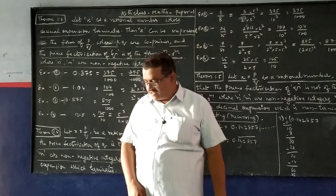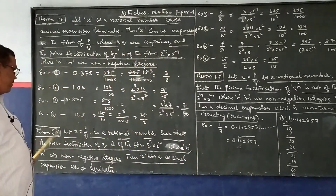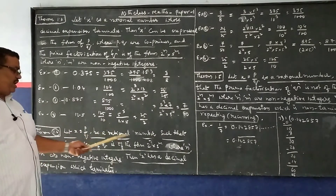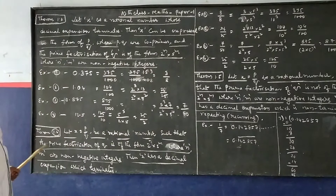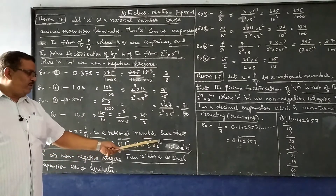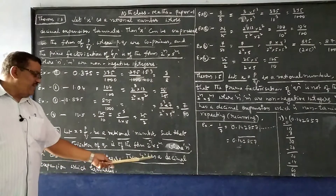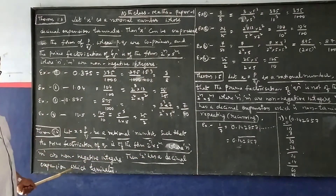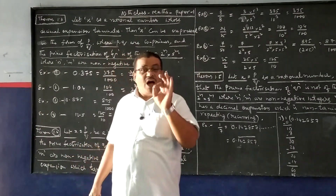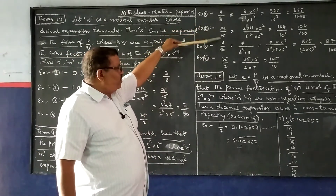This is the clear notes about yesterday's class. Once again I have to give the details. Now go through theorem 1.4: Let x = p/q be a rational number such that the prime factorization of q is of the form 2^n × 5^m, where n and m are non-negative integers. Then x has a decimal expansion which terminates. Theorem 1.4 is quite the converse of 1.3. Here we have to take all p by q forms.